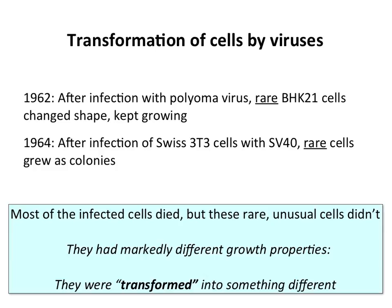At the same time, people started to study DNA viruses that transformed cells. In 1962, polyomavirus was found to transform cells — a small double-stranded DNA virus. Polyoma is a mouse virus that was found to transform hamster cells. In 1964, mouse cells were found to be transformed by SV40, a monkey virus. Notice it's always the wrong species, and the transformation event is rare — most cells either die or are unaffected; only rare cells show markedly different growth properties.